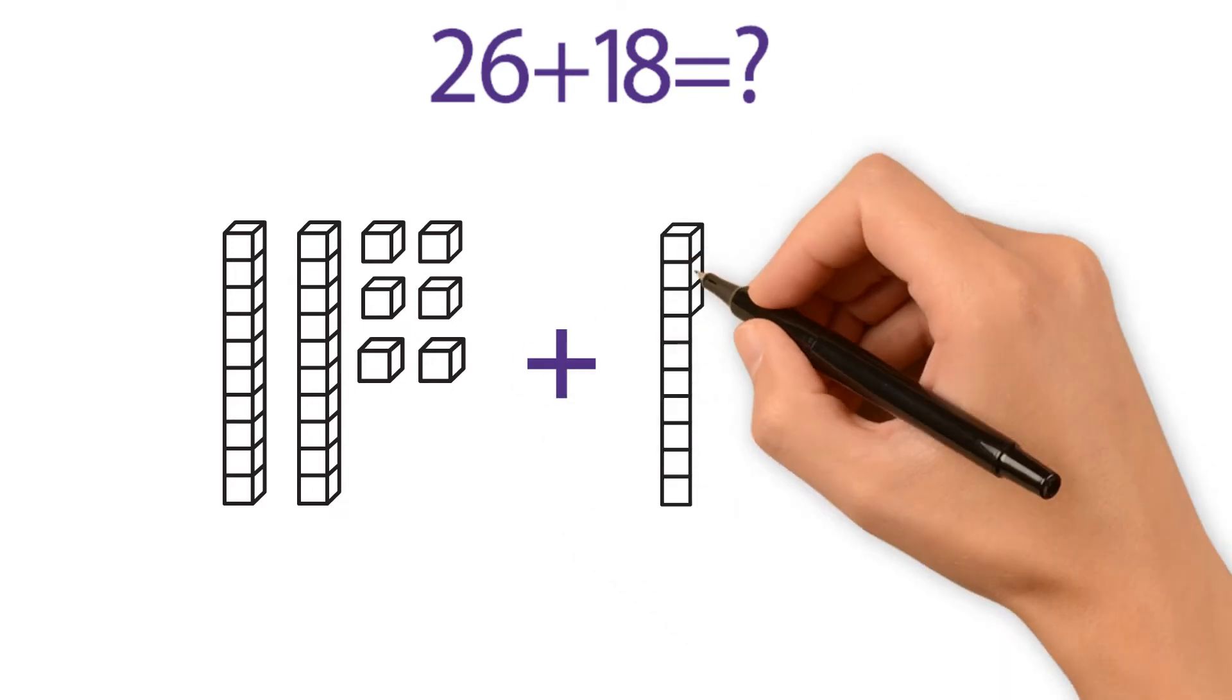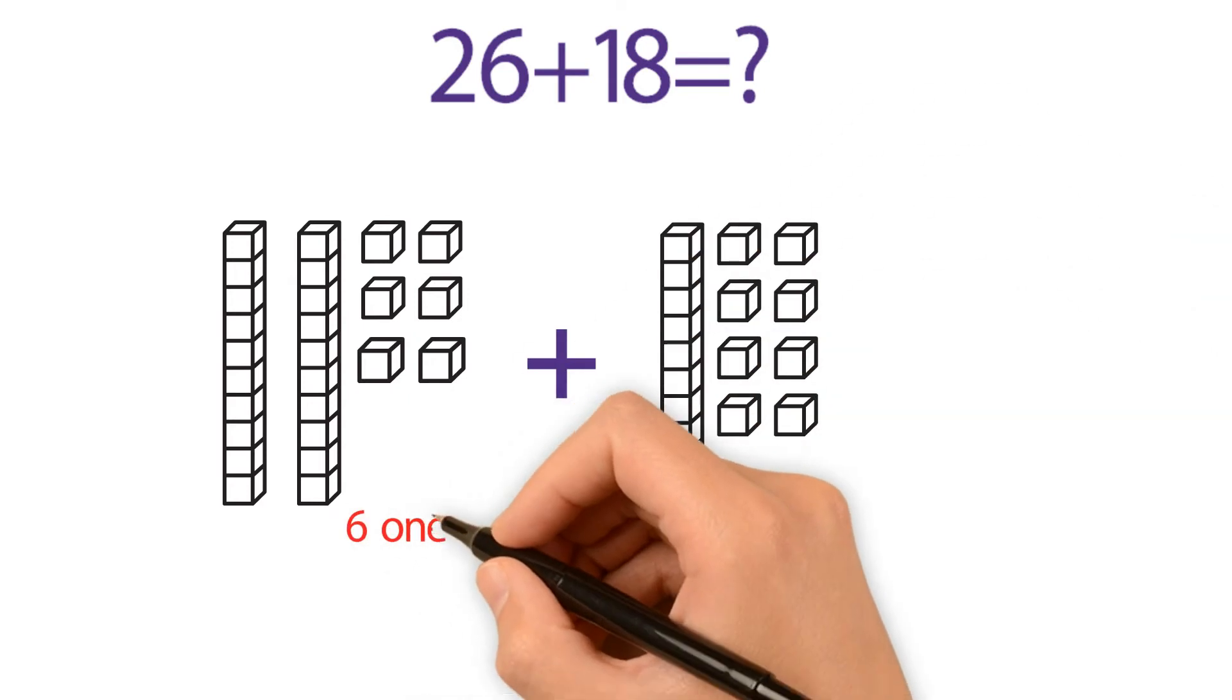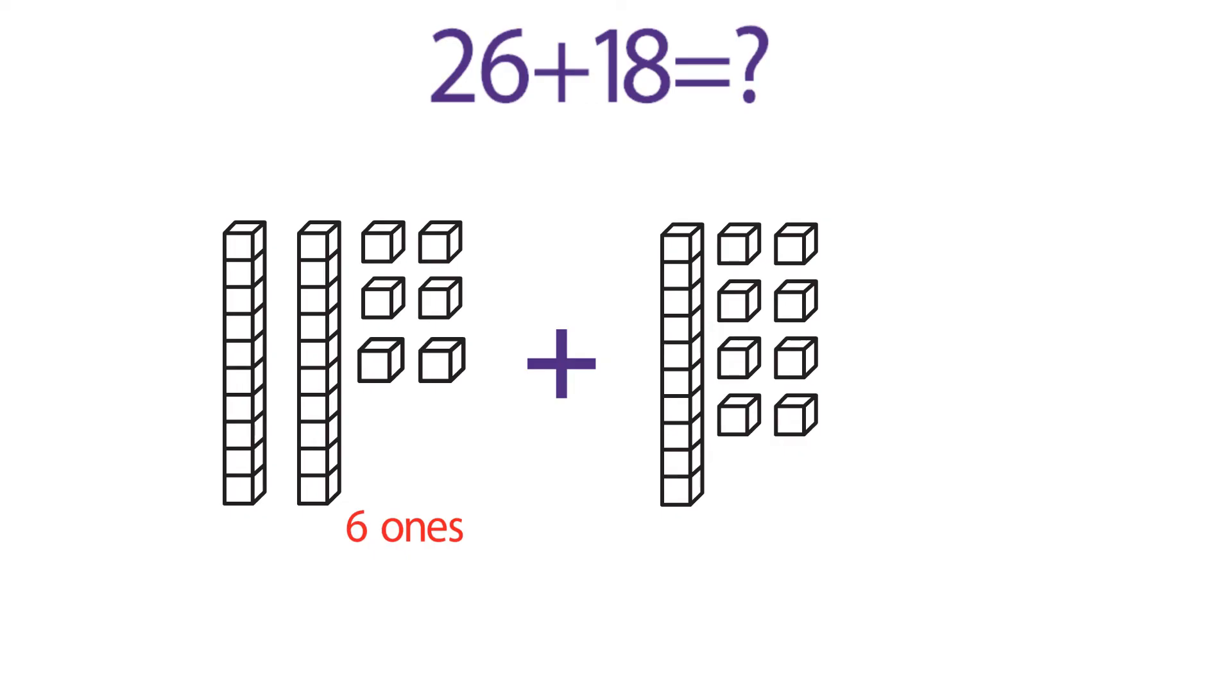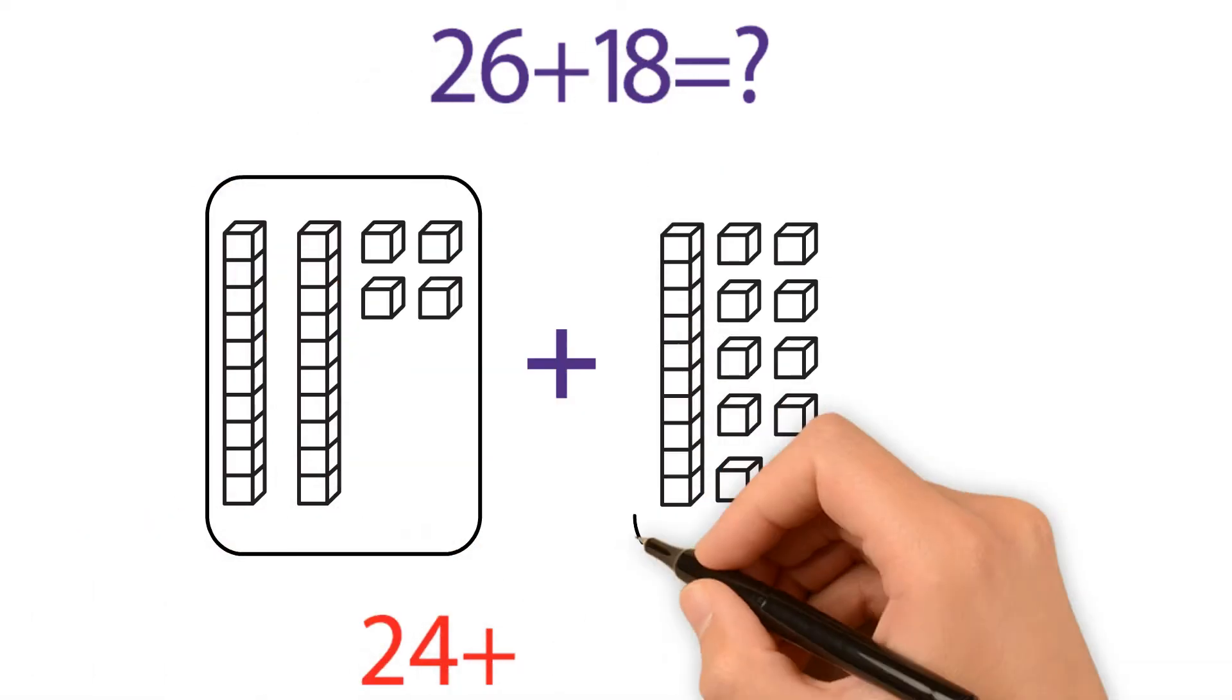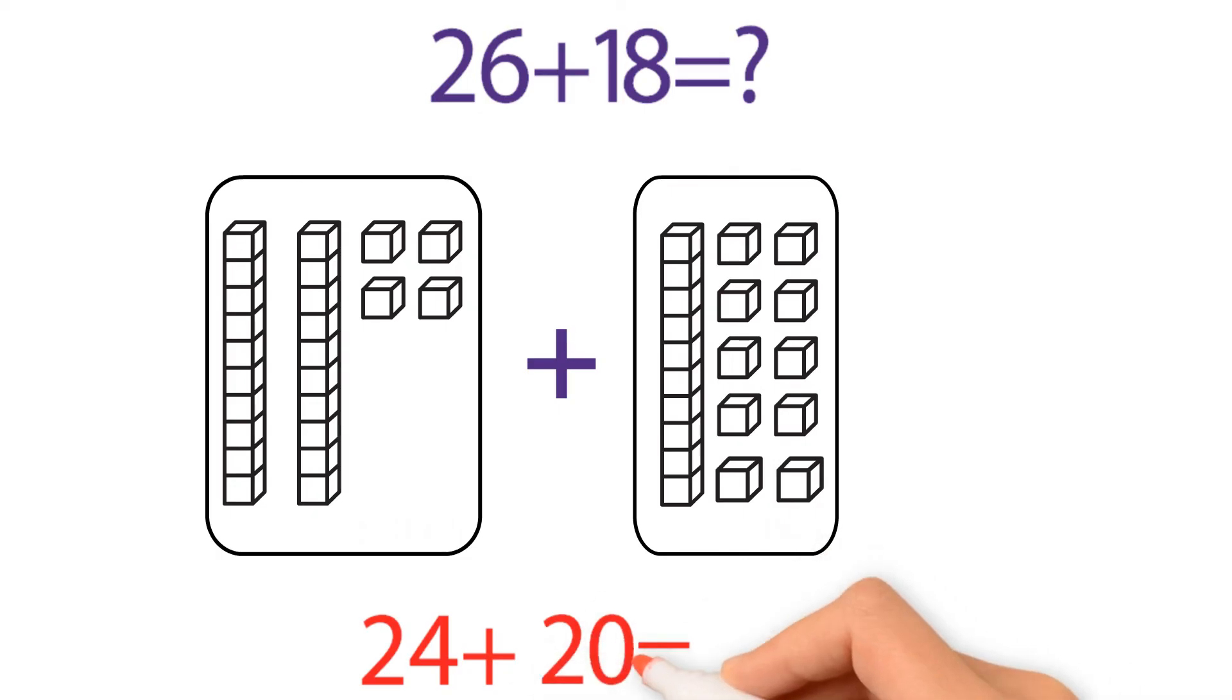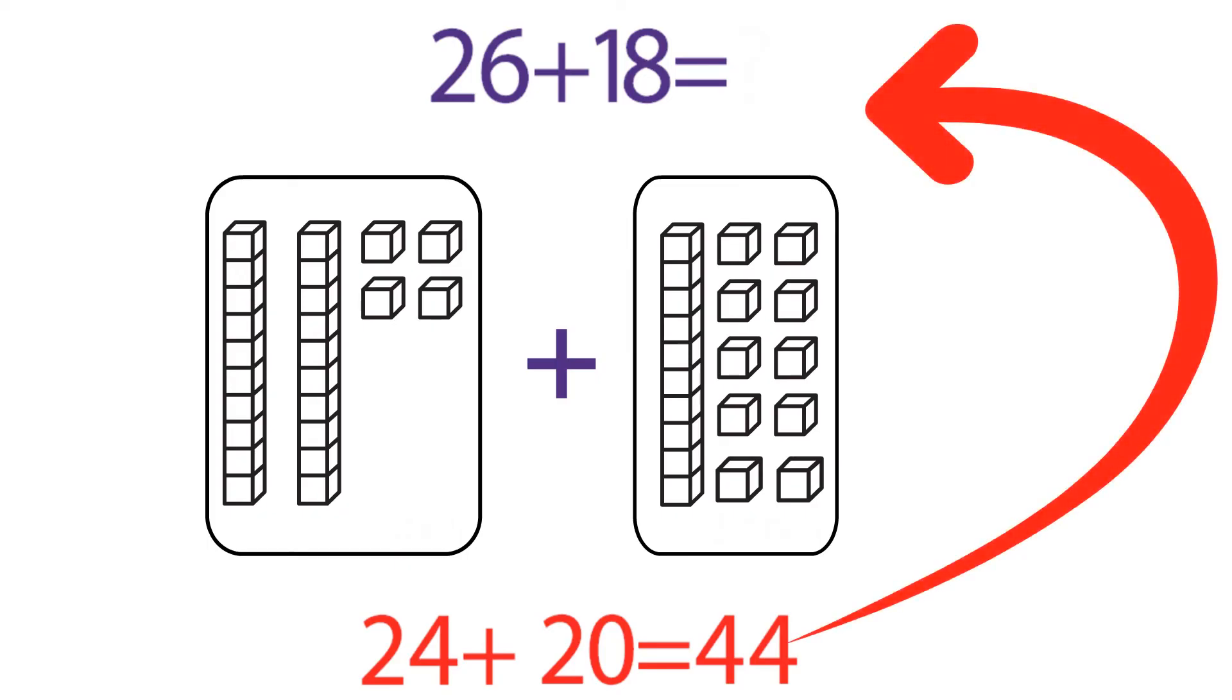18 has one ten and eight ones. 26 has fewer ones than 18, so we transfer two of them to 18 to create a friendly number. 26 becomes 24 and 18 becomes 20. So 24 plus 20 equals 44, which means 26 plus 18 also equals 44.